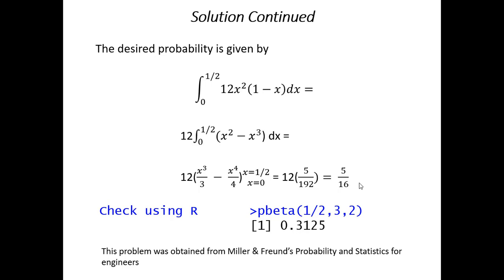We could try to confirm that. Maybe using R. So, we would use p beta, 1 half, 3, 2. And R would return 0.3125. So, that's our answer in decimal form.